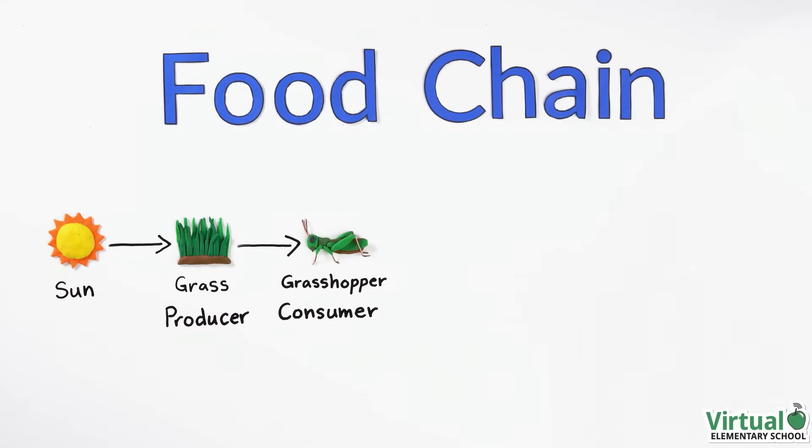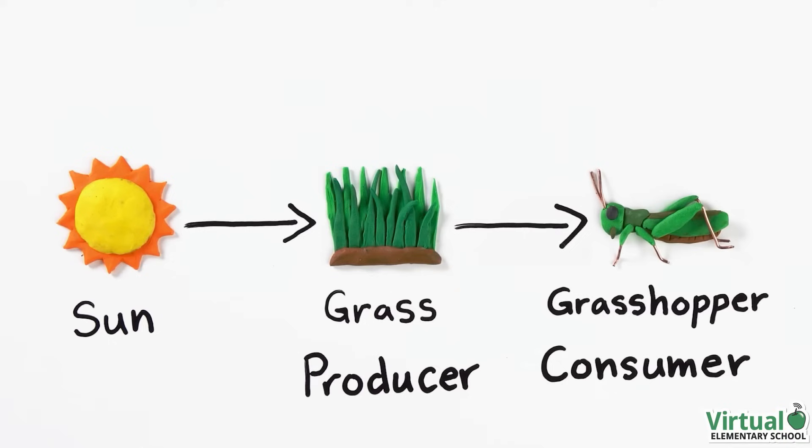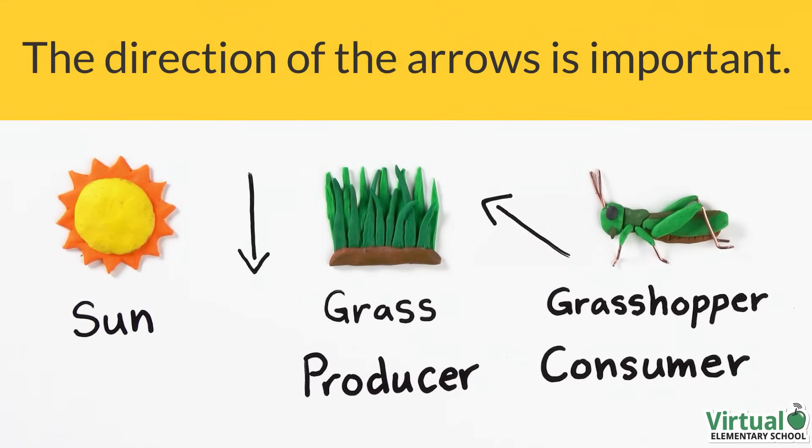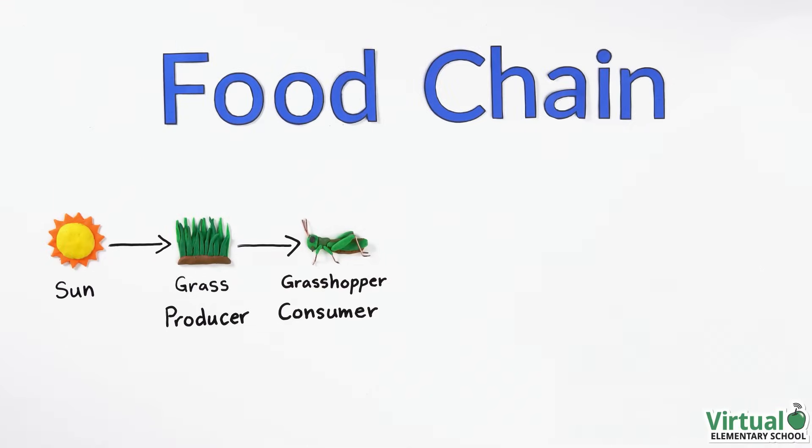When creating a food chain, arrows are used to show the feeding relationships. The direction of the arrows is important. The arrow always points in the direction the energy is going. Let's add more living things to our food chain.